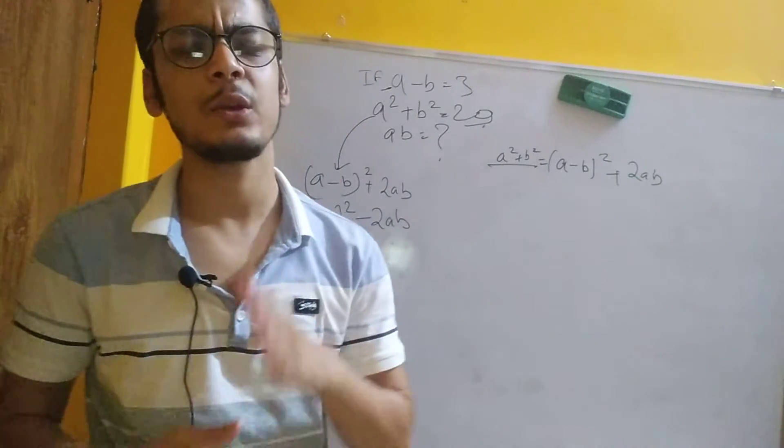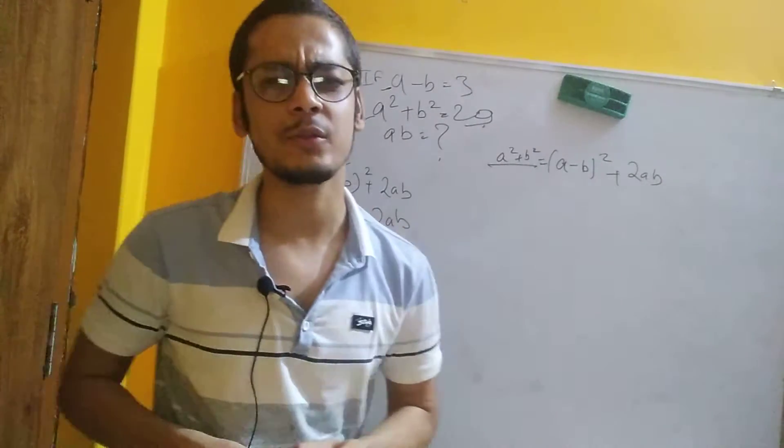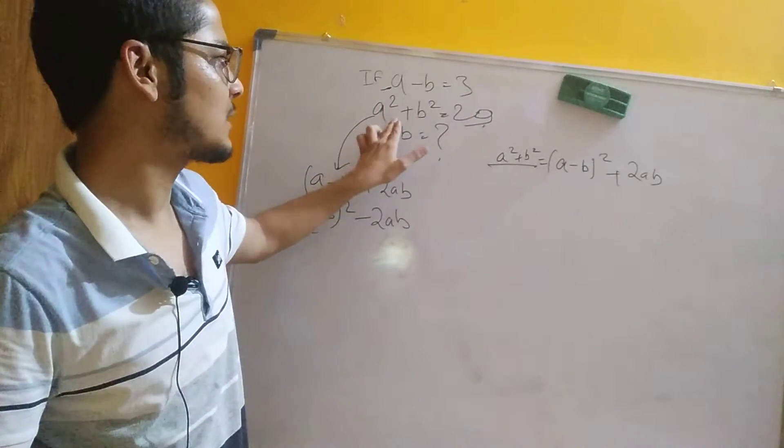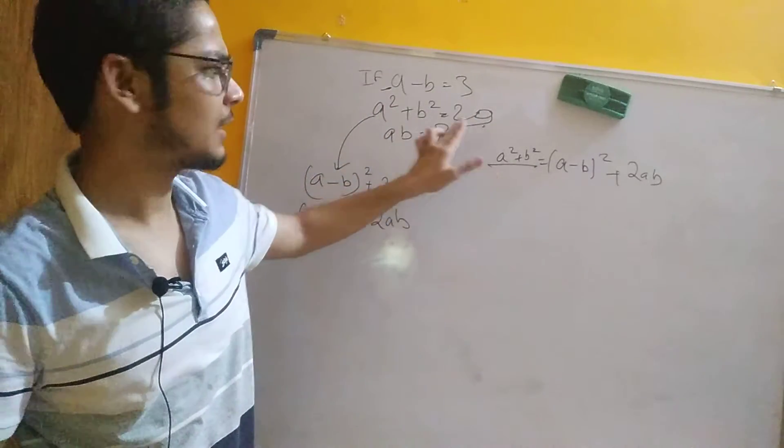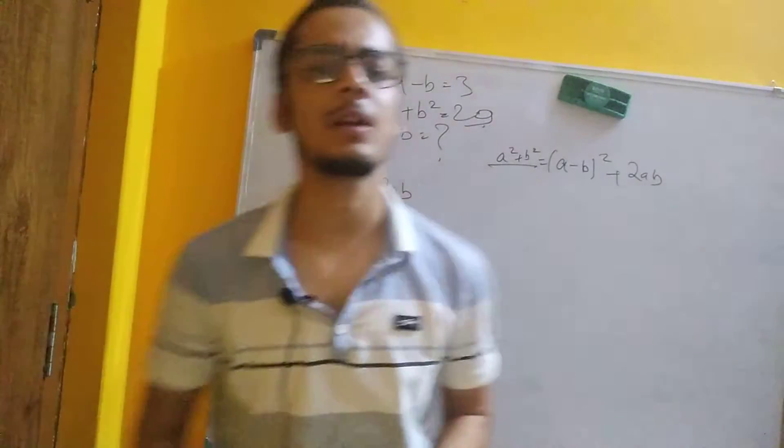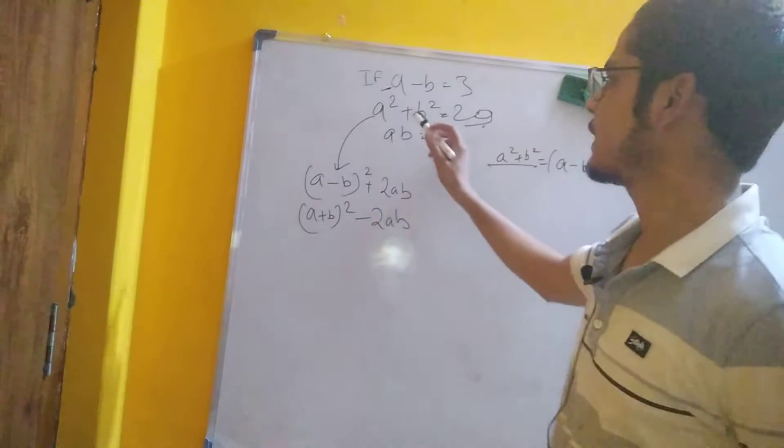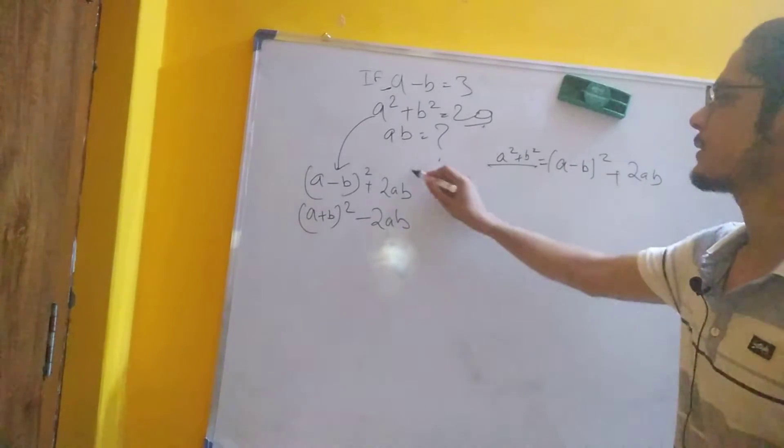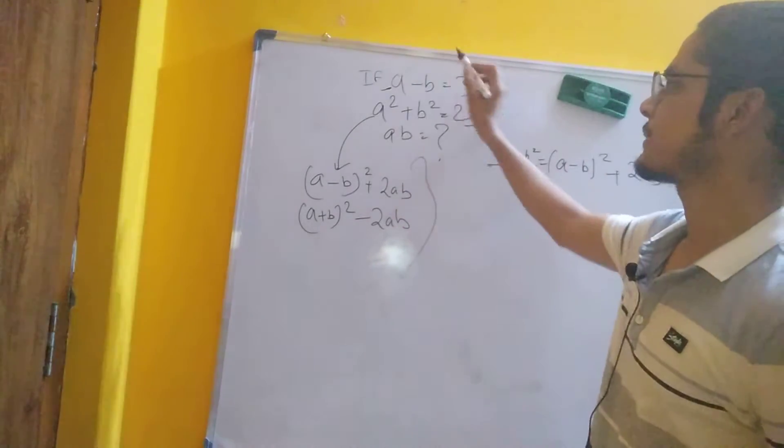Namaskar. I will show you how to solve this problem where a minus b equals 3. The purpose of this question is to use the given information that a squared plus b squared equals 29. We know the formula for a minus b.